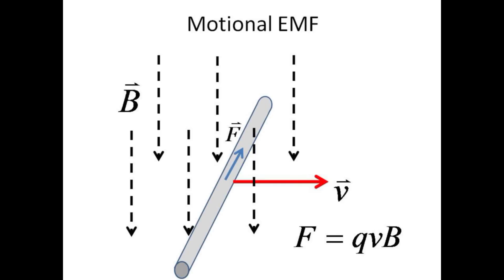Setting aside for the moment our understanding that it is the negative electrons which move freely in the metal, we can imagine free positive charges being propelled in the direction of F toward the far end of the conducting wire.